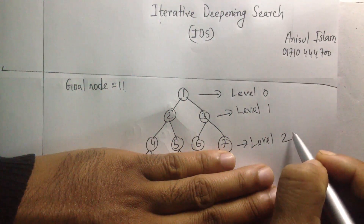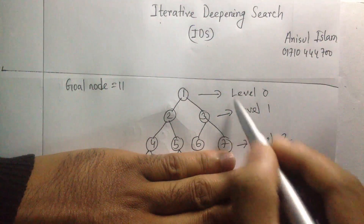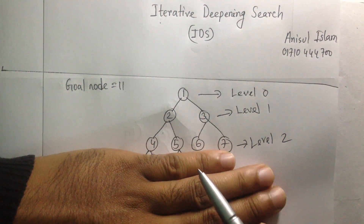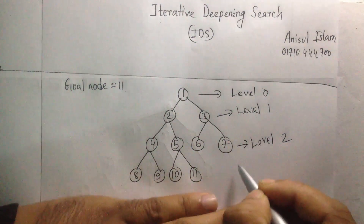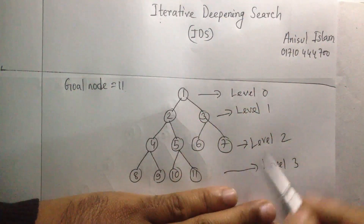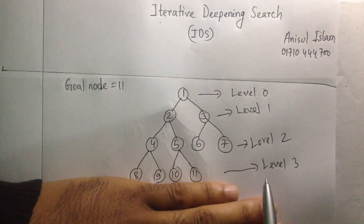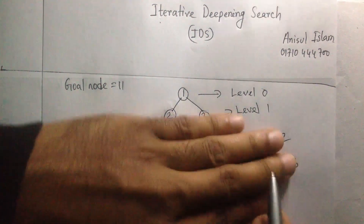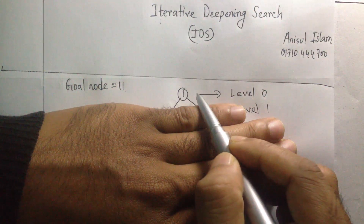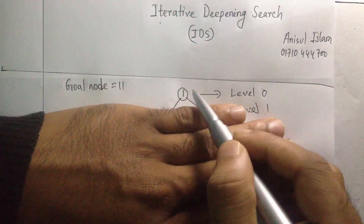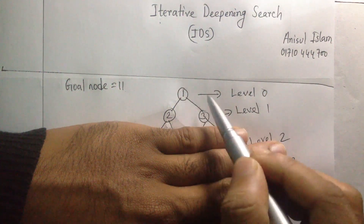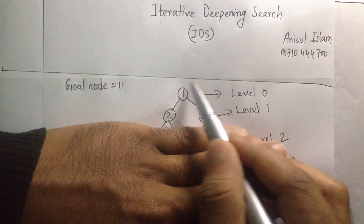Again if you don't find your solution or goal node, you increase the level again — now your limit is up to level 2. You use DFS again, and if you find your goal node that's okay, but if not, you go to level 3 and once again use DFS from the root node. So: start with level 0, use DFS; if not found, increase the level.